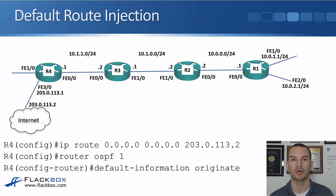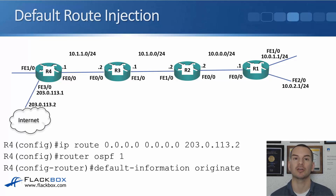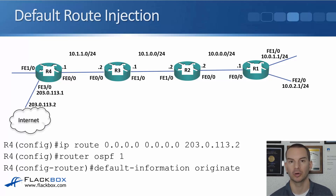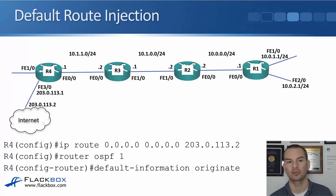The last thing to cover is default route injection, configured similarly to how it was for RIP. In the example, R4 is connected out to an internet service provider, so we configure a static default route on R4 with the command ip route 0.0.0.0 0.0.0.0 with a next hop address of 203.0.113.2. We don't want to configure static routes on all our routers, so we inject it into the OSPF process on R4 using router OSPF 1 and then default-information originate. It will look for a default route on the router and inject that into OSPF.